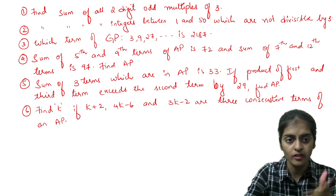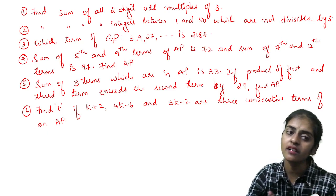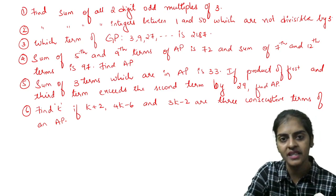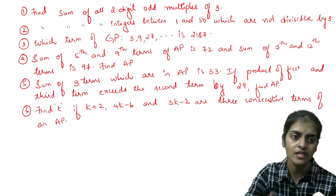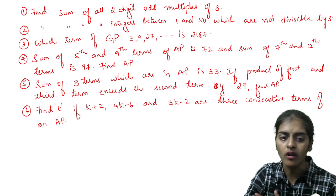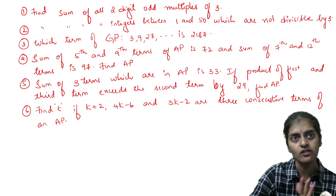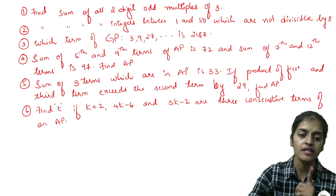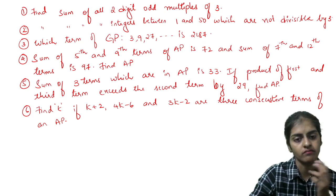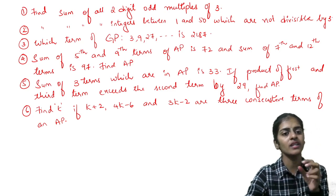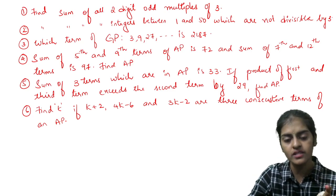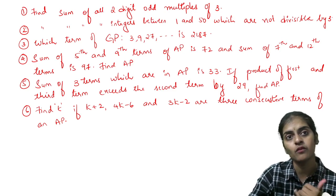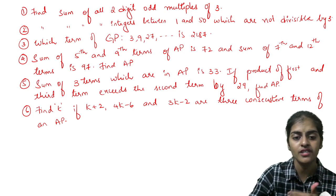Substitute in the nth term of GP: a times r to the power n minus 1. You will get the value of n. Which term means always the n value. After this, which term of the AP is something—same method, take all values and substitute in nth term of AP: a_n equals a plus (n minus 1) times d.